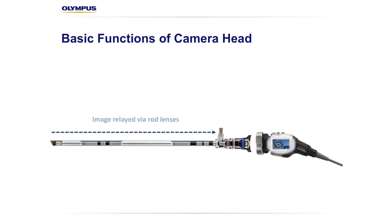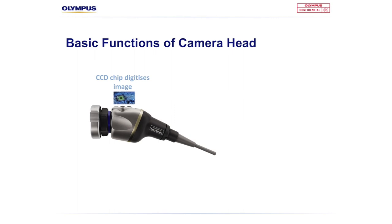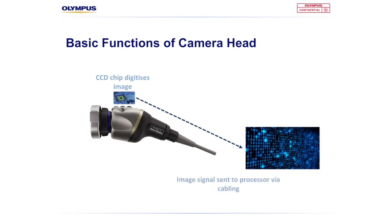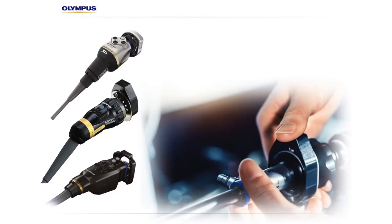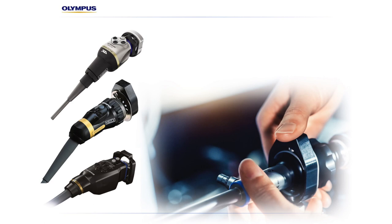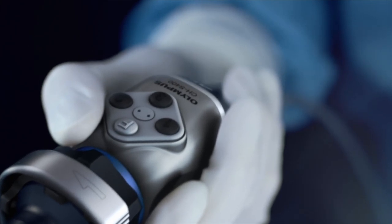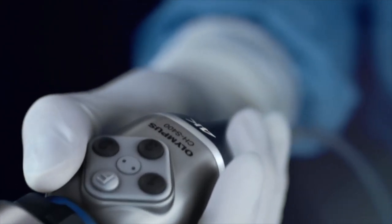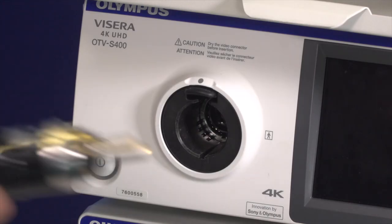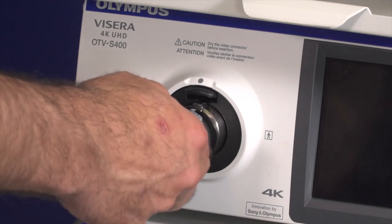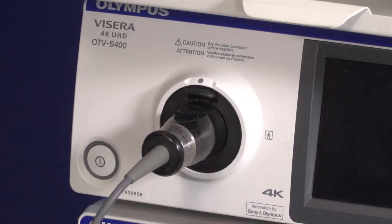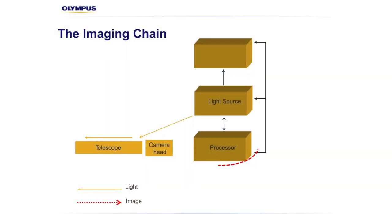The digitization is typically done by a computer chip sitting behind the camera head lens. The chip receives the light or photons onto its surface and then digitizes them, turning them into an electronic signal. Camera heads come in various shapes, sizes and capabilities depending on their intended use, and are ergonomically designed to sit in the operator's hand comfortably whilst the electronic cable carries the signal back to the tower. This leads to the next component of our imaging chain: the processor.